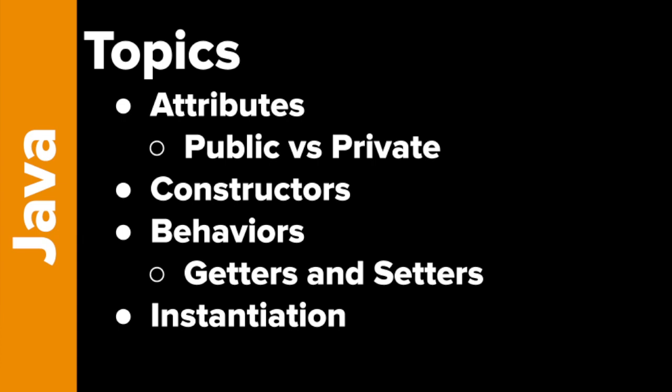A constructor is a special type of method that creates an object. Behaviors are the actual methods of a particular class. And instantiation is where we actually create some objects. We might jump around a little bit to see how things go, but let's get started.